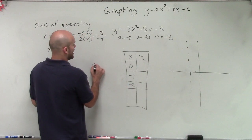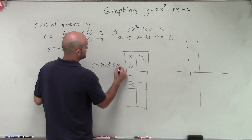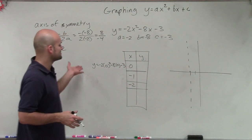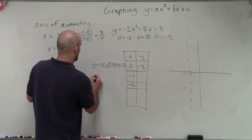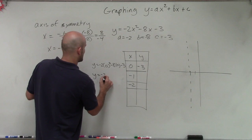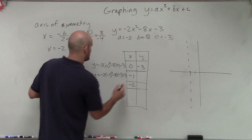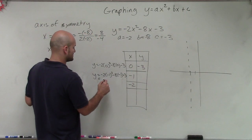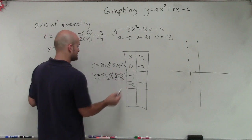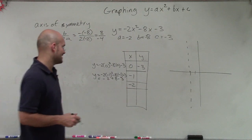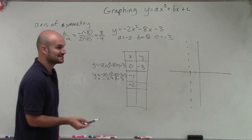Let's evaluate: y equals negative 2 times 0 squared minus 8 times 0 minus 3. Well, 0 squared is 0, times negative 2 is 0, minus 8 times 0 is 0, so y equals negative 3. Then for x equals negative 1: y equals negative 2 times negative 1 squared minus 8 times negative 1 minus 3. Negative 1 squared is 1, so that's negative 2 plus 8 minus 3, which gives us positive 3.